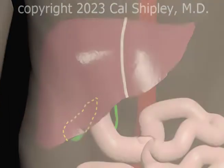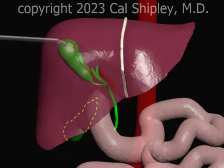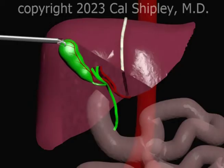The goal of a cholecystectomy procedure is to remove the gallbladder from the body. The gallbladder is positioned behind the liver, and so a grasping instrument is used to lift the gallbladder and expose both it and the relevant surgical anatomy.